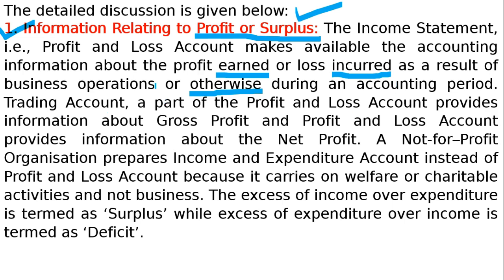Trading account is a part of profit and loss account. यह नया item आपको मिल रहा है — trading account. Trading account है factory के income यानि sales और stock — credit side होता है. Factory का सारे खर्चे — factory rent, wages, factory lighting, factory heating, customs, duties — सारे debit side होता है. अगर sales ज्यादा है और खर्चा कम है relating to factory, तो उसको बोलते हैं gross profit. और अगर खर्चा ज्यादा है, तो there is gross loss. It is a part of profit and loss account which provides information about gross profit.